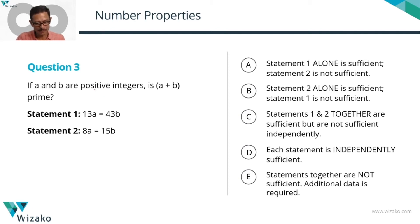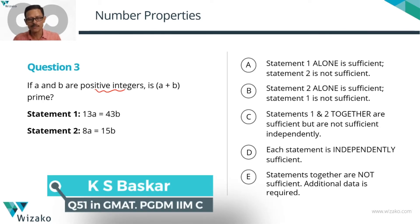a and b are positive integers. Keep track of these things - if a and b are not positive integers, sometimes these questions cannot be solved conclusively. Is the sum a + b prime? That's what we need to answer. Two statements are given. This is a question starting with a verb, so the answer should be yes or no.